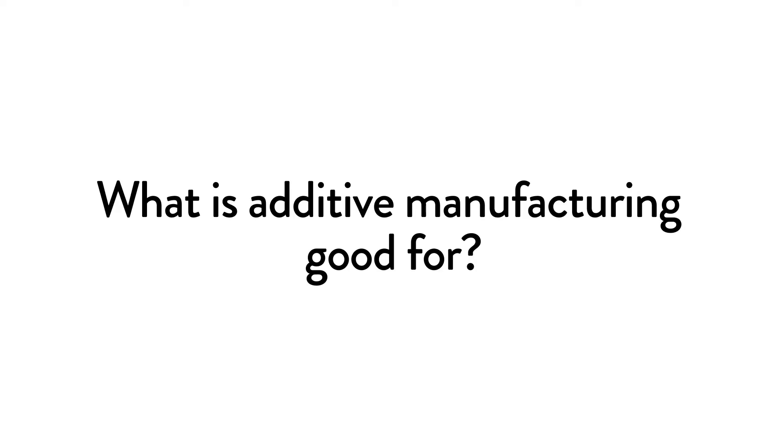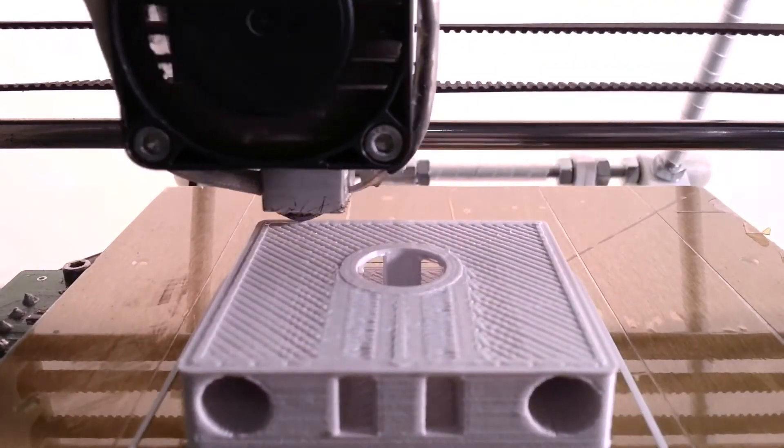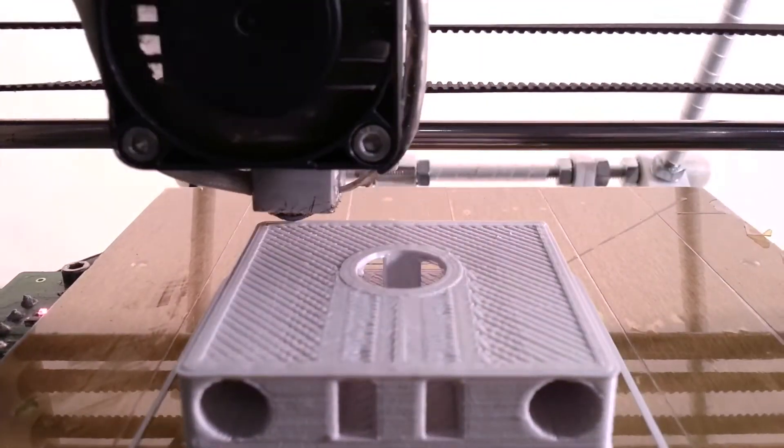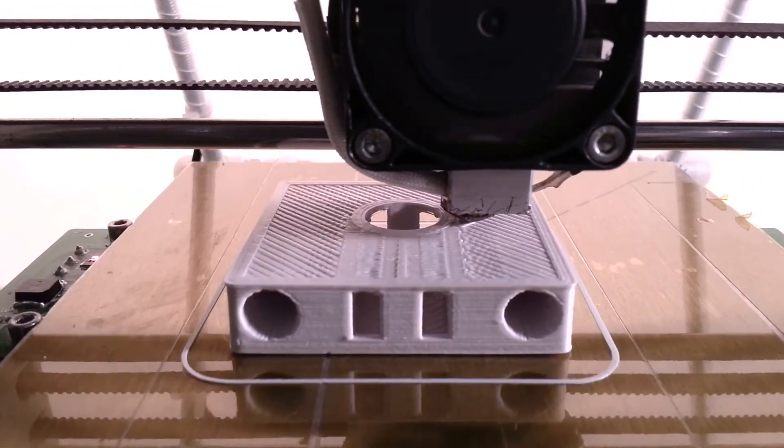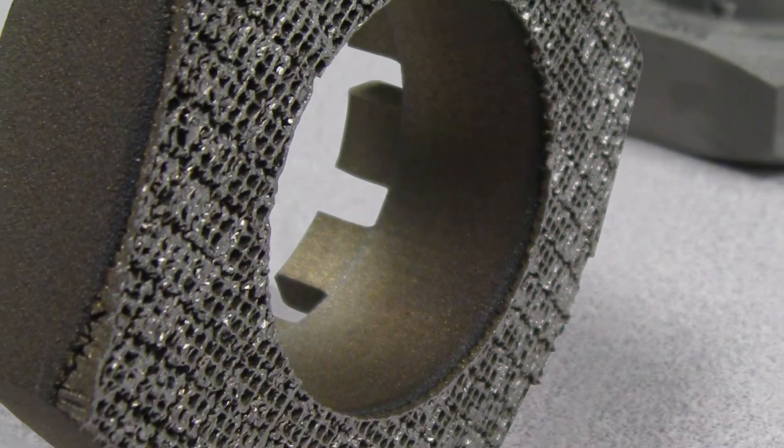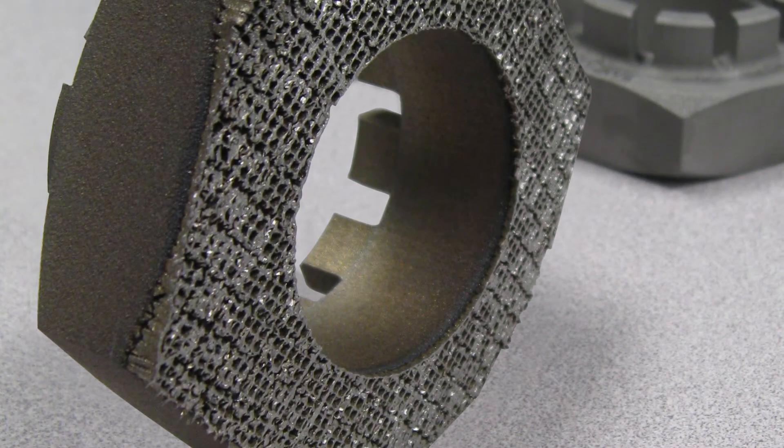Because the part is built up instead of being machined from the outside or molded, additive manufacturing makes it possible to produce forms that maybe wouldn't be possible to make in any other way. Possibilities include parts that have complex internal channels, parts with lattice or honeycomb structures on the inside for weight savings.